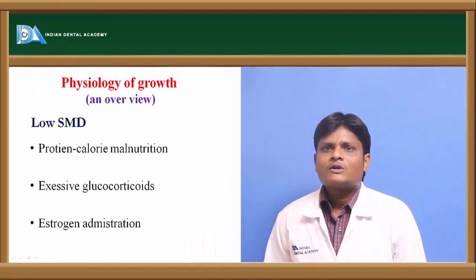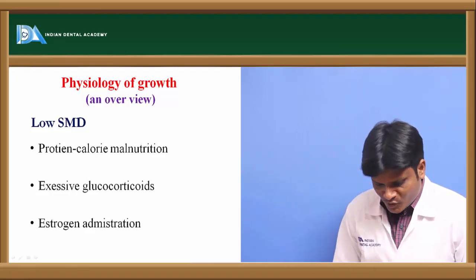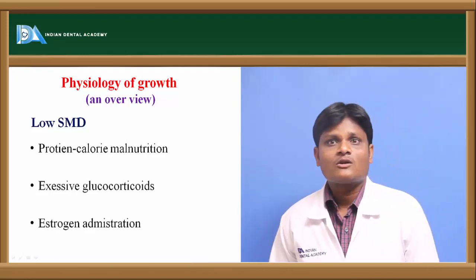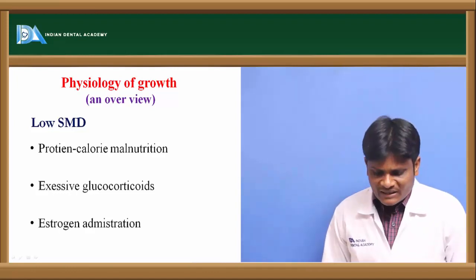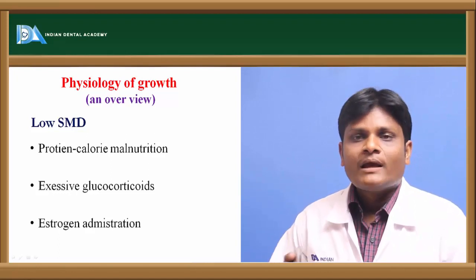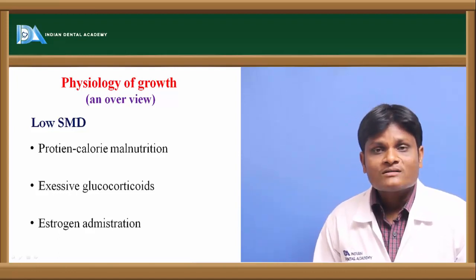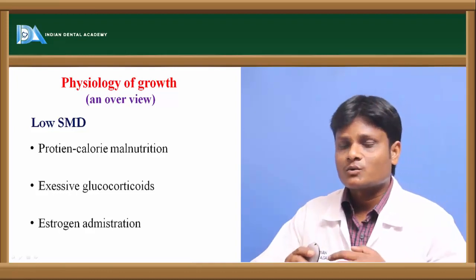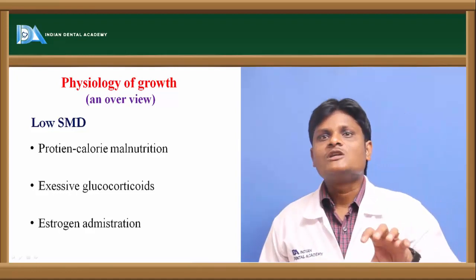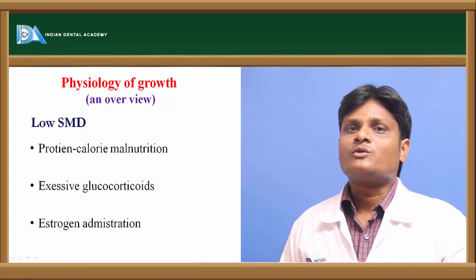When an individual has low levels of somatomedin, we see stunted or retarded growth. Low levels of somatomedin are seen in cases of excessive glucocorticoids, protein-calorie malnutrition, or excessive levels of estrogen. Any condition that negatively impacts somatomedin secretion will lead to retarded growth, whereas sufficient levels of somatomedin will lead to optimized growth.